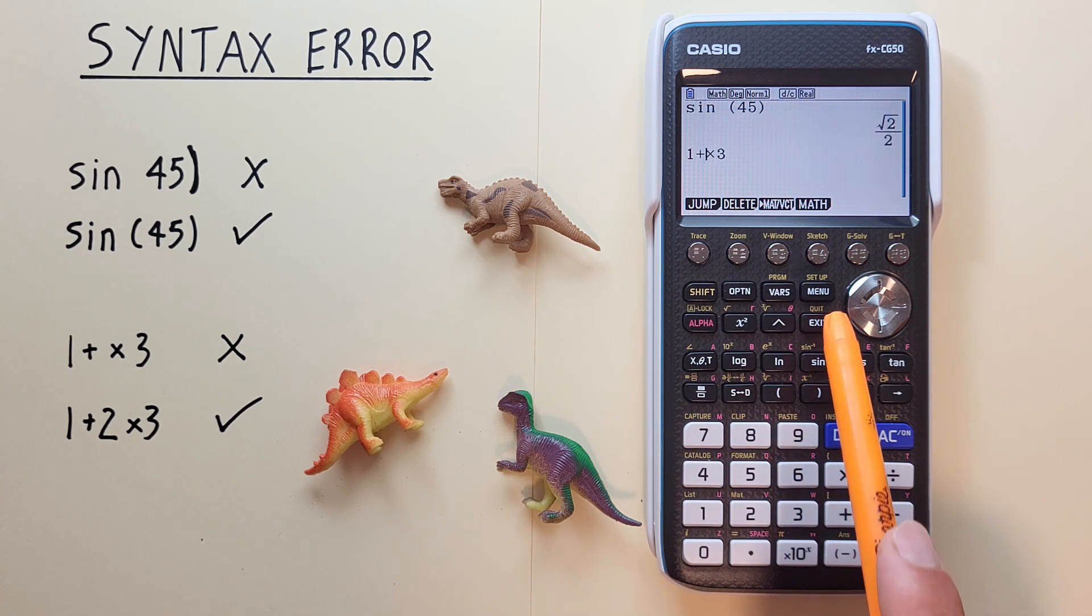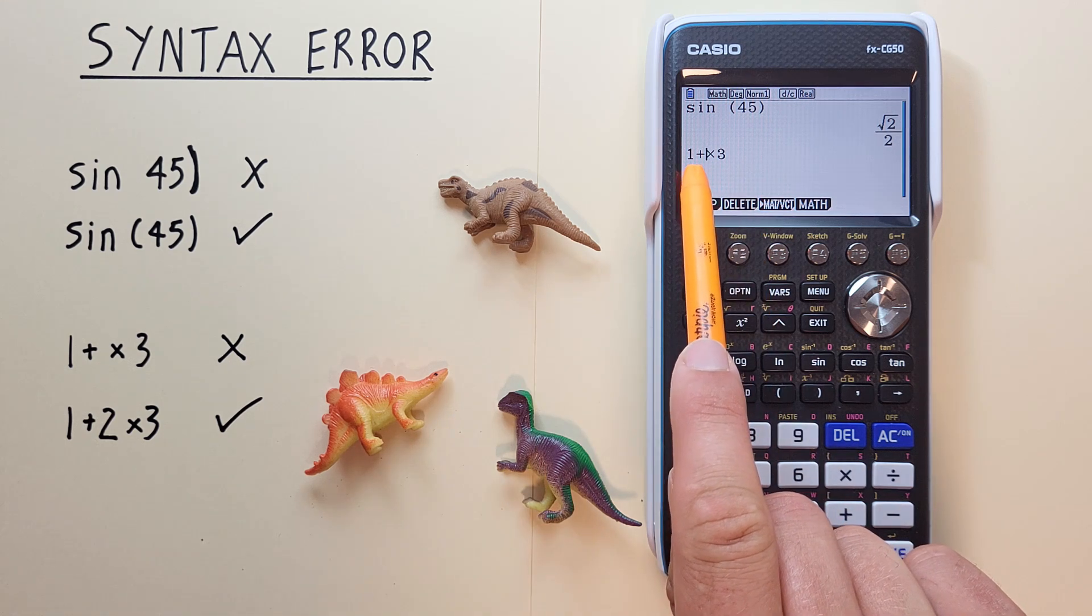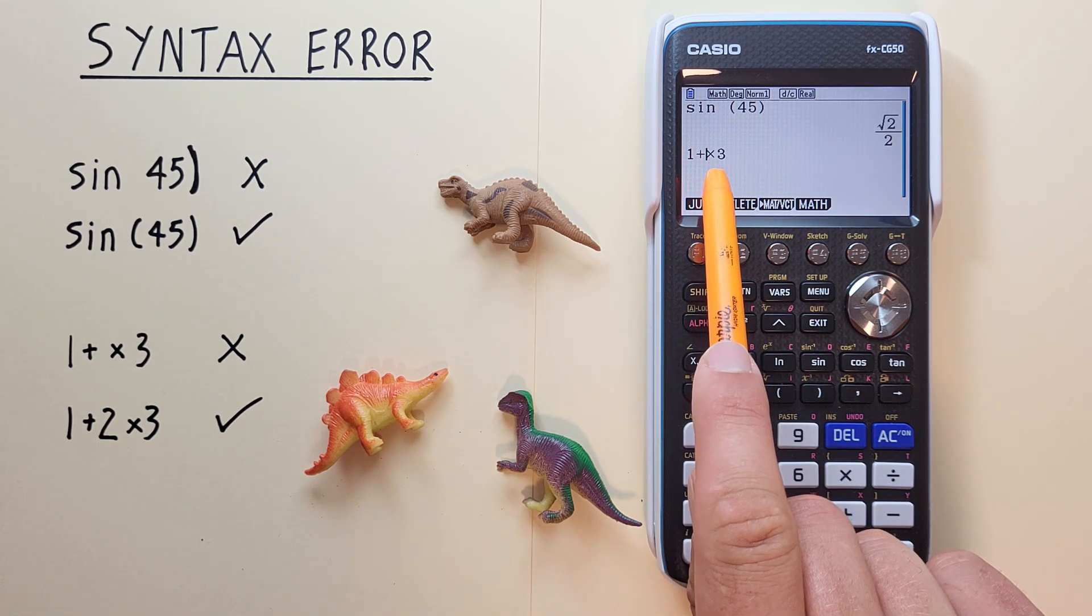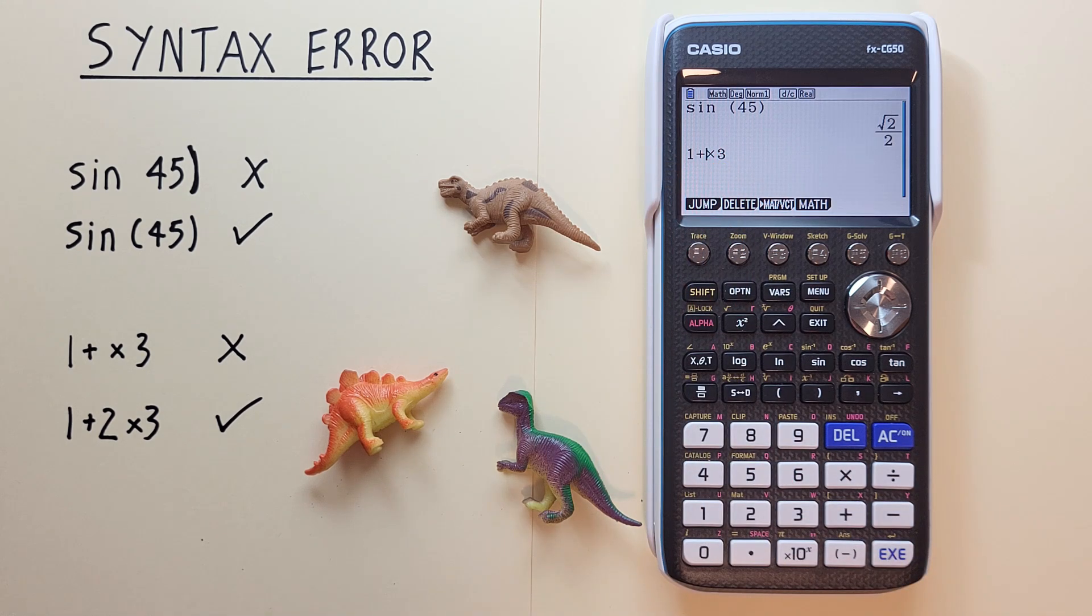So we can exit out of there and we see our cursor has been automatically moved between the plus and the multiplication signs which is where the calculator encountered the syntax error.